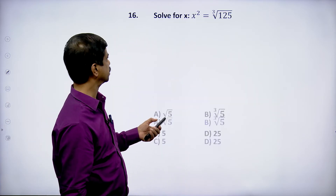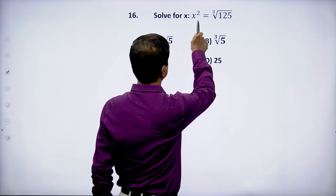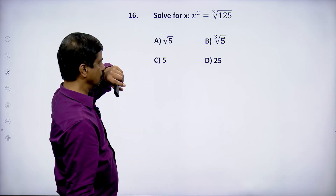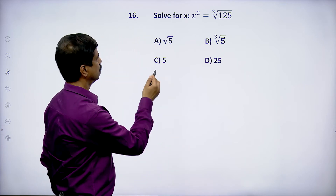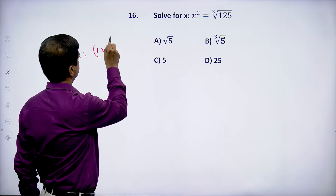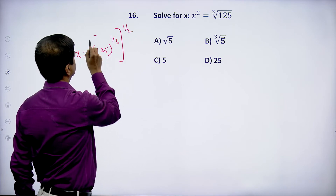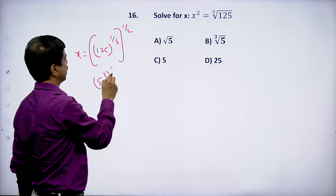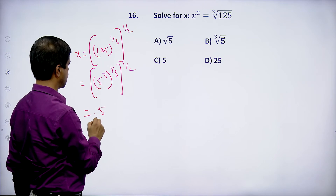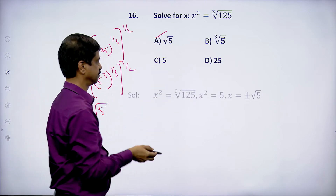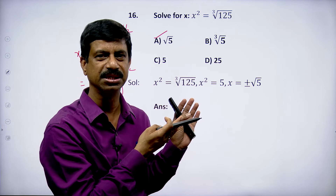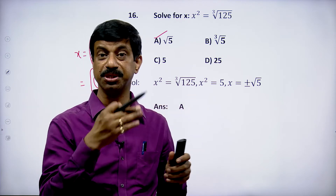Next question: x² = ∛125. So x = 125^(1/3·1/2) = (5³)^(1/3·1/2) = 5^(1/2) = √5. Option A satisfies. Please note it fast.